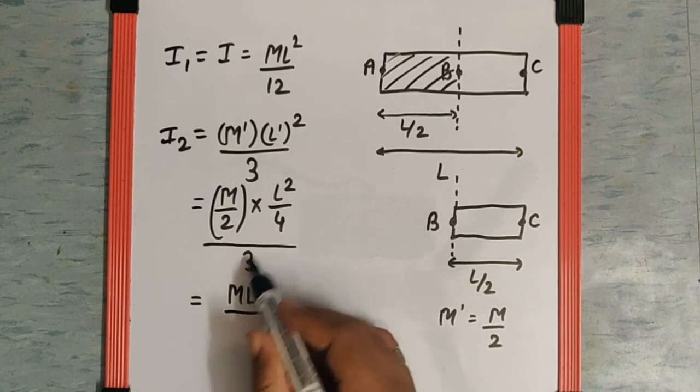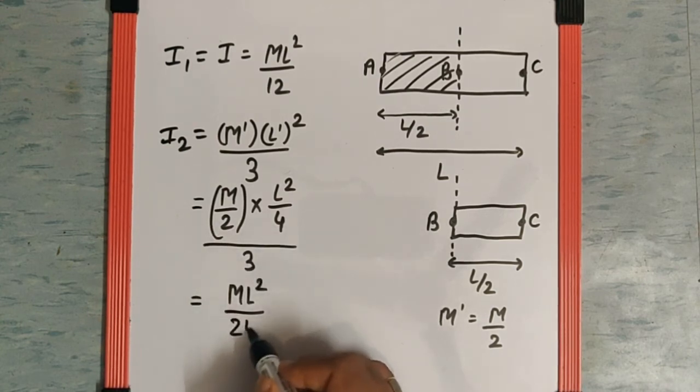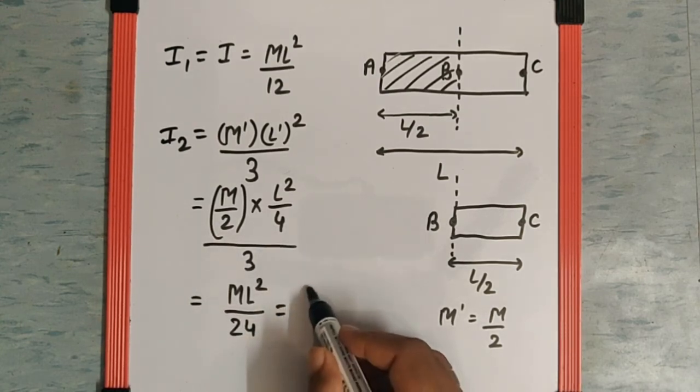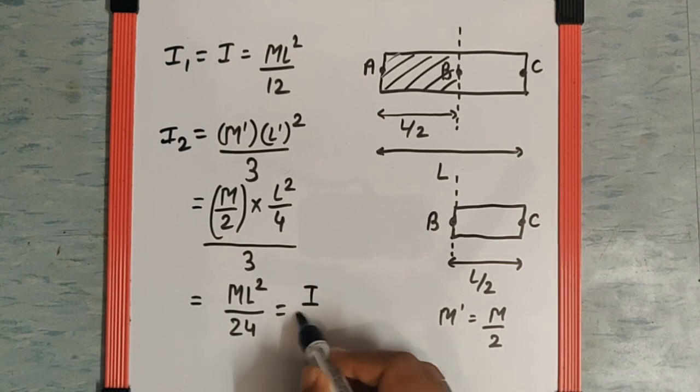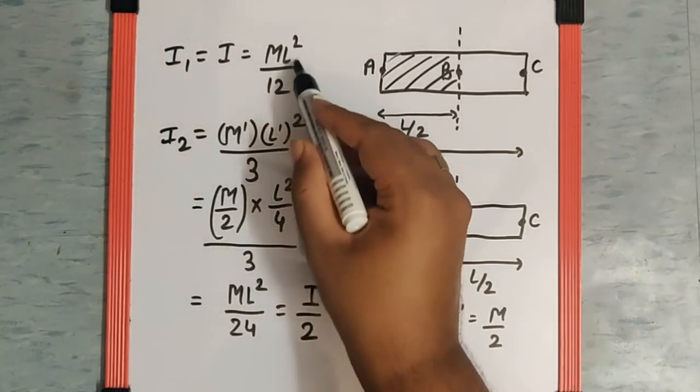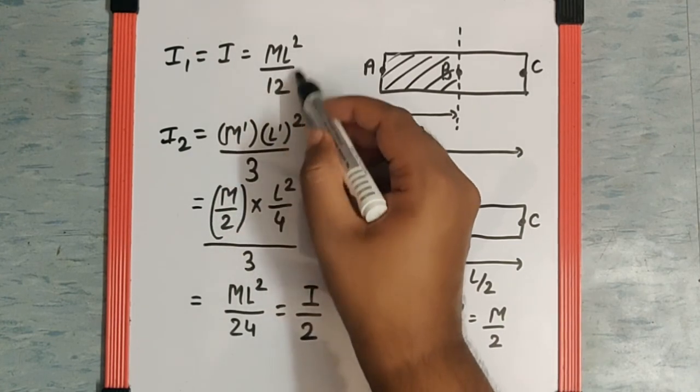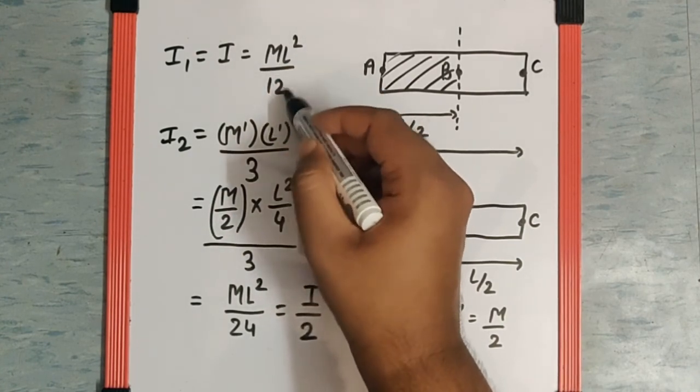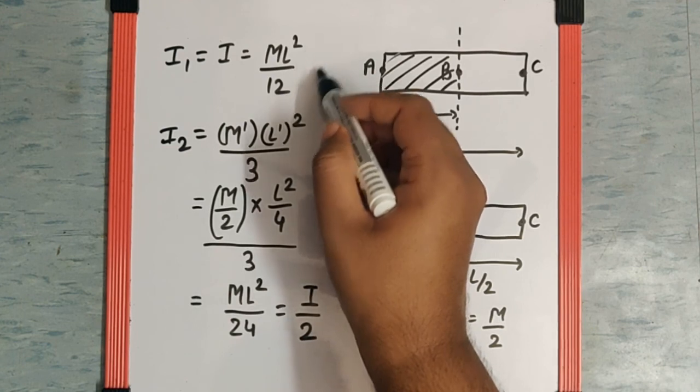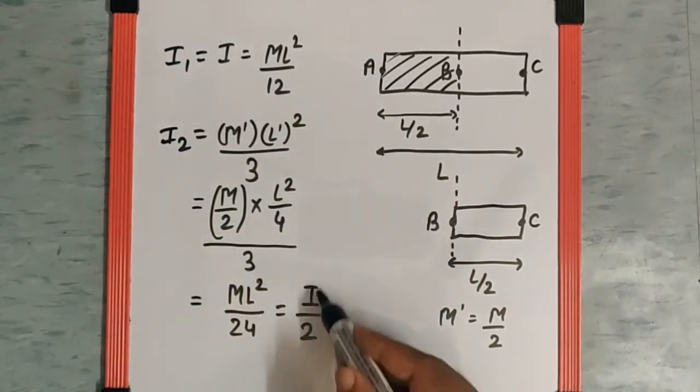Which is nothing but I by 2 because ML² by 12 was I. So if I multiply and divide by 2 over here, I get ML² by 24 over here and the 2 over here. The 2 goes down and so we get the answer is I by 2.